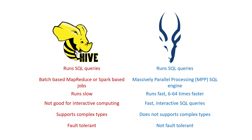You may be wondering which one to use. Hive is not ideal for interactive computing, whereas Impala is intended for interactive computing. Hive is batch-based because it uses Hadoop's MapReduce, whereas Impala is not. Hive supports complex types but Impala doesn't. Hive is fault tolerant, whereas Impala doesn't support fault tolerance — if execution fails halfway with Impala, you have to start from the beginning.